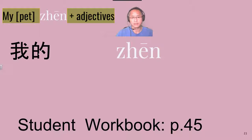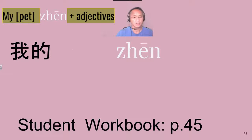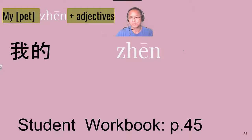So 我 (wǒ) means I or me, and 我的 (wǒde) means mine or my. Then we talk about the item here — so we've got my, which is 我的. Then the pet goes here. And then our degree word — which we're using here just for this example — is 真 (zhēn) for 'really'. Don't forget 很 (hěn) can also be put here. And then our adjective, our descriptive word, goes last.